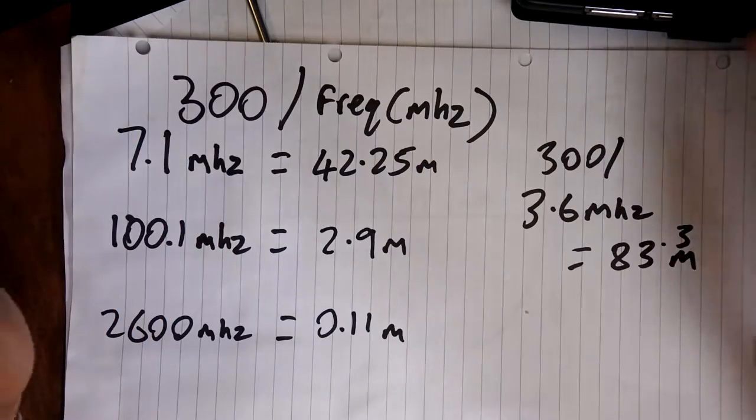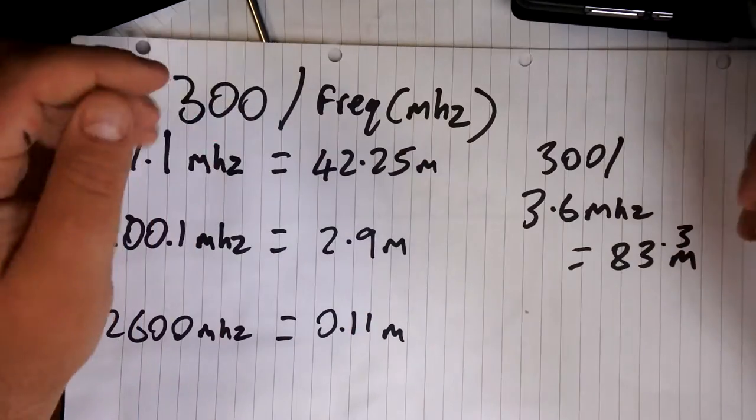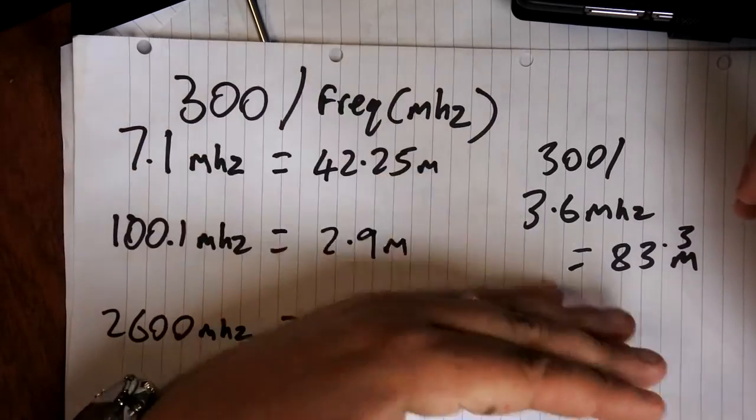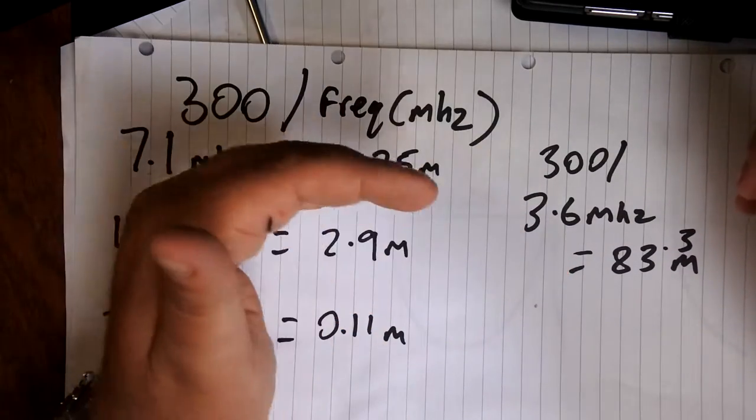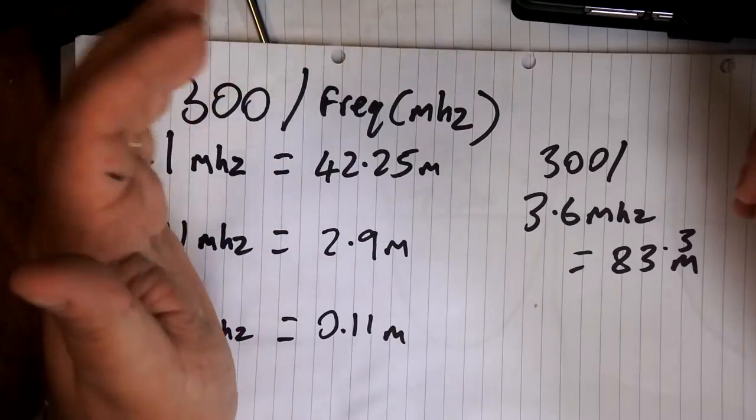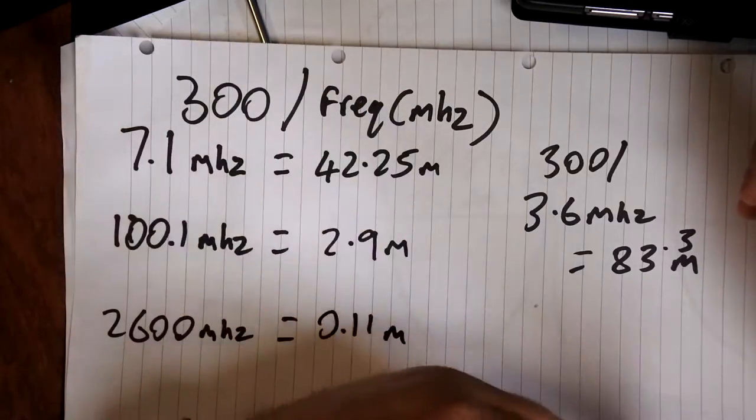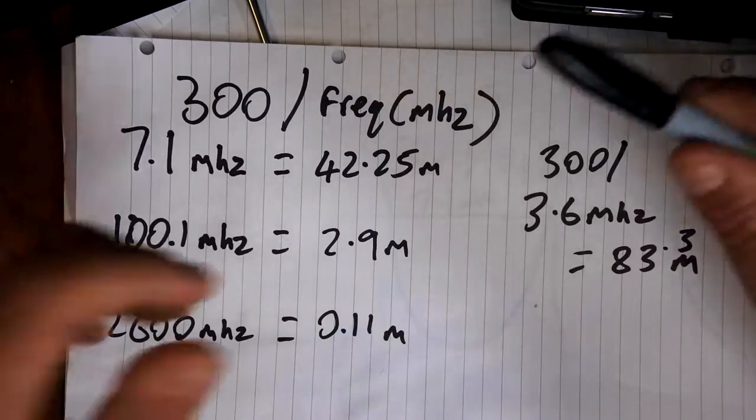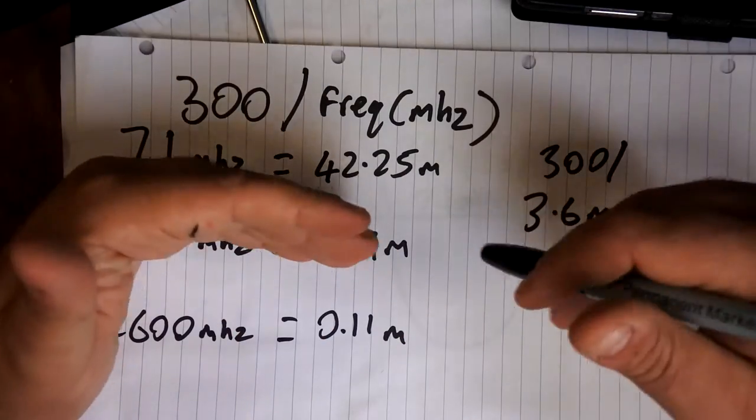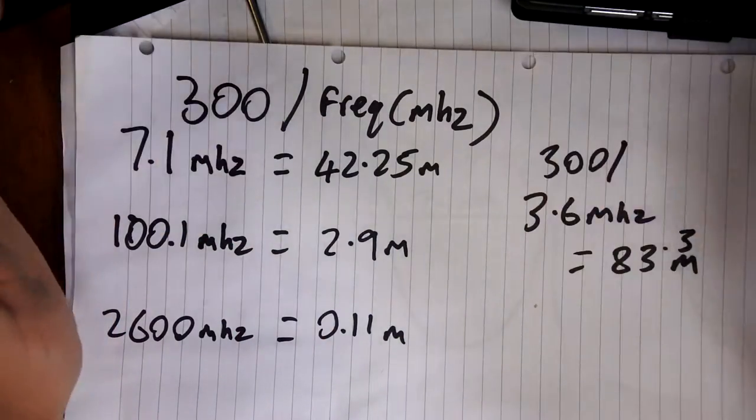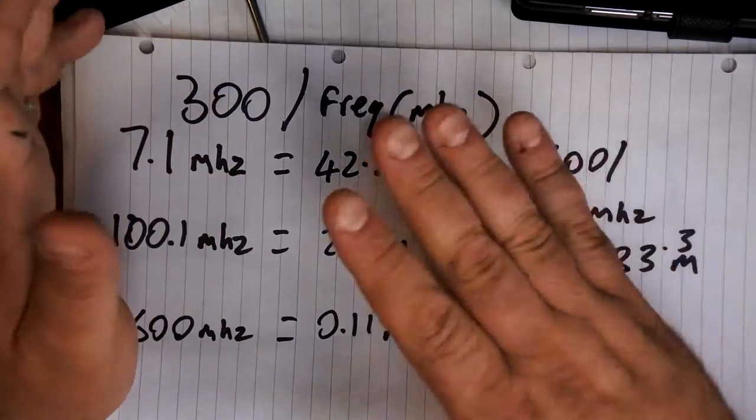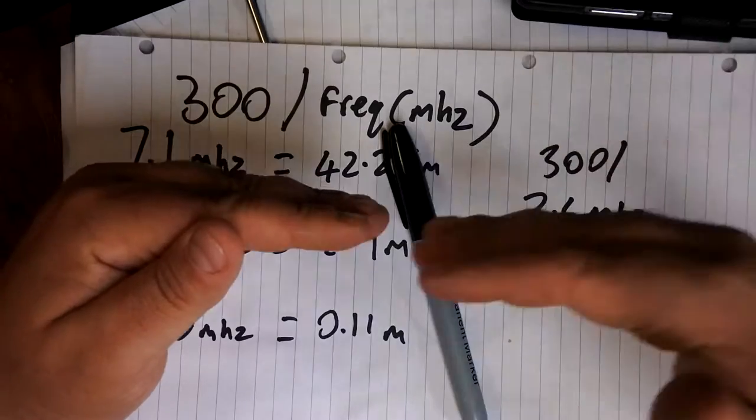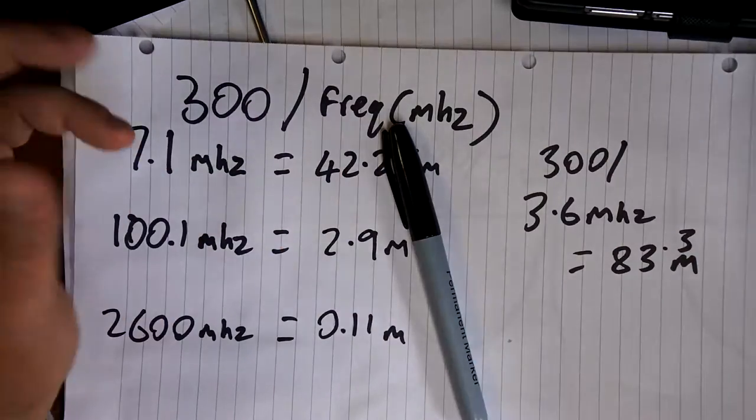If you use an antenna that's too short, then you have major problems. Because what effectively happens is, as you're pumping the signal in, it reaches the end, the wavelength energy reaches the end before it expects, and it bounces back. And several things can result in this. First, the most obvious one is it interferes with the signal. Effectively, as one signal is coming out, the previous signal, part of the signal is coming back and it mixes together and distorts the signal.